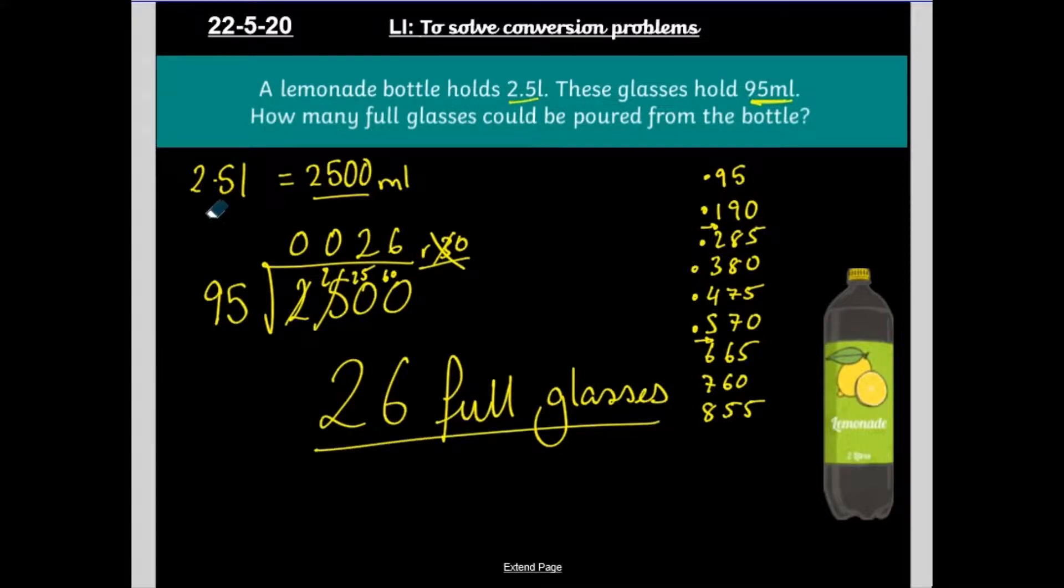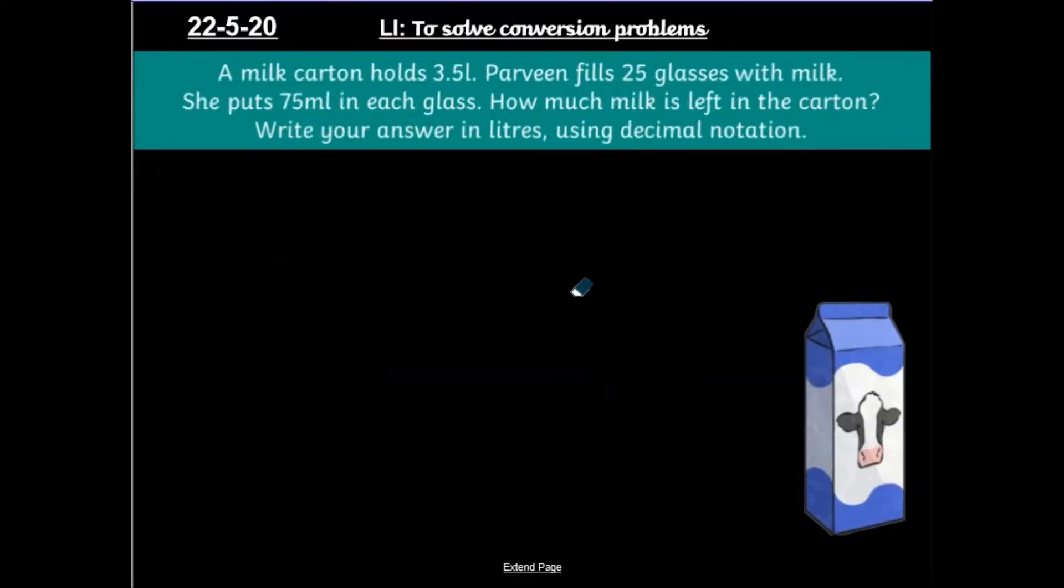Now remember, first of all, I have converted into the same unit of measurements. I've converted to millilitres. Then I've done my division to find out how many glasses I could get. Now, of course, I have used a bus stop method, but if you would prefer to use a different division method, that is absolutely fine. The remainder does not matter today or not in these questions anyway, because I'm asking for full glasses. So whatever's left over is just left over.